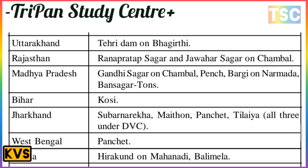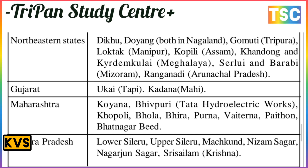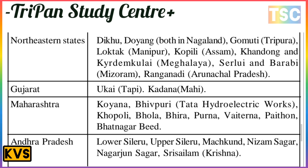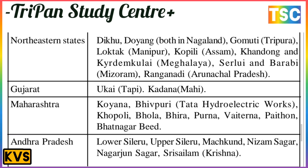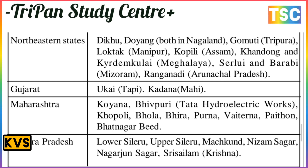Odisha has Hirakud and Machkund. The northeastern states have Dikhu, Doyang in Nagaland, Gumti in Tripura, Loktak in Manipur, Kopili in Assam, and others. Gujarat has Ukai, Mahi, Tapi, and Kundana. Maharashtra has Khaopoli, Bhira, Bhivpuri, and Tata hydroelectricity projects. Andhra Pradesh has lower Sileru, upper Sileru, Kundah, Nizamsagar, Nagarjunasagar, and Srisailam.